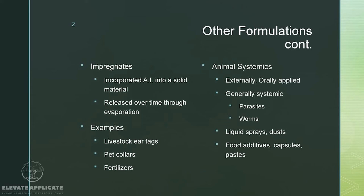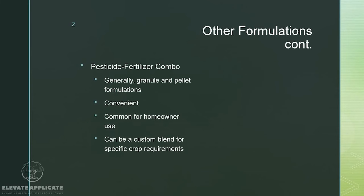Impregnants incorporate active ingredient into a solid material released over time through evaporation. Examples include livestock ear tags, pet collars, and fertilizers. Animal systemics can be applied externally or orally — generally for systemic parasites and worms — via liquid sprays, dust, food additives, capsules, or paste. Pesticide-fertilizer combinations are generally granule and pellet formulations, convenient because you're combining two applications — common for homeowners. Think weed and feed. They can also be custom blends; for example, some nurseries incorporate bifenthrin granules into their soil, which gets absorbed into trees and shrubs for longer-lasting protection.